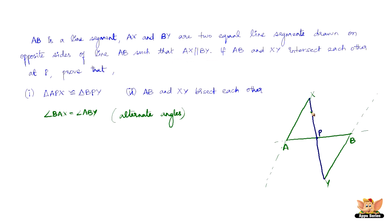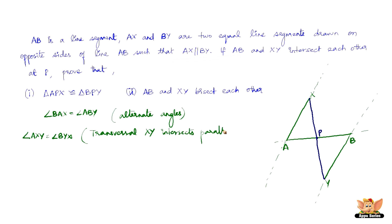Similarly, angle AXY equals angle BYX. Two parallel lines can have any number of transversals. Apart from AB, if we extend the parallel lines on either side, XY is another transversal intersecting parallel lines AX and BY at X and Y respectively. Therefore angle AXY equals angle BYX because they are alternate angles.